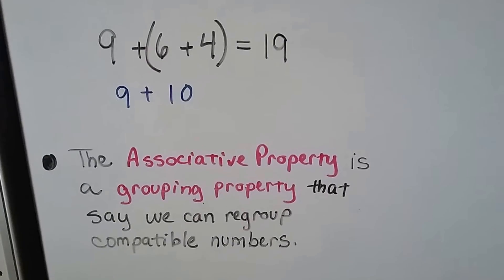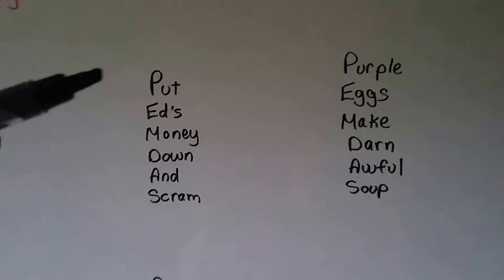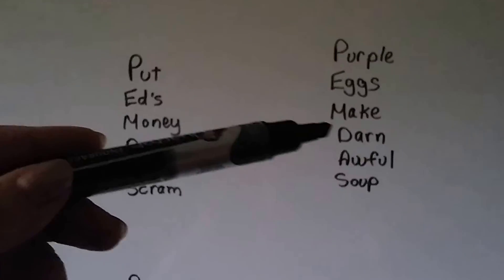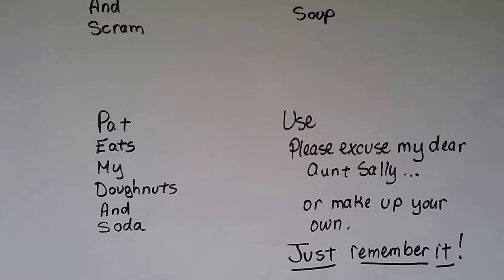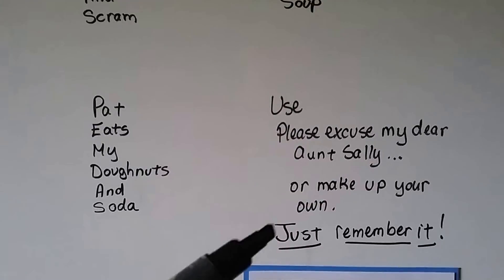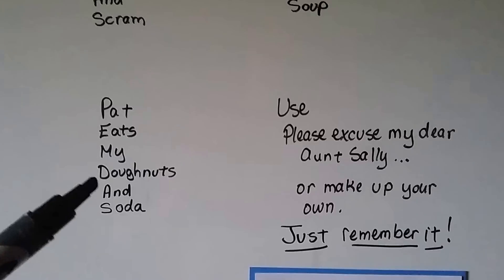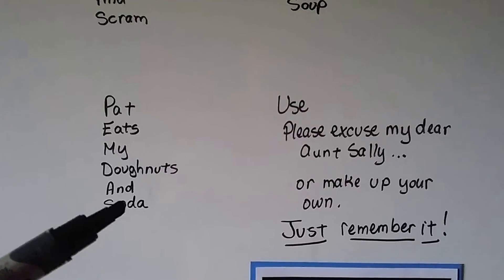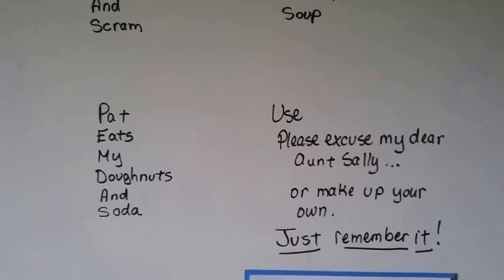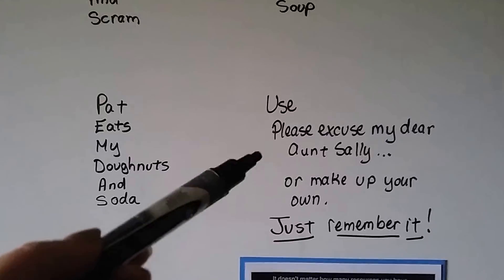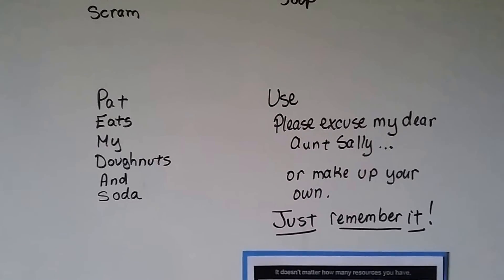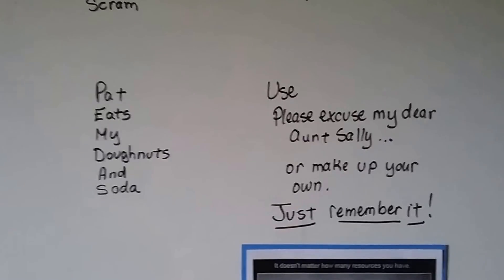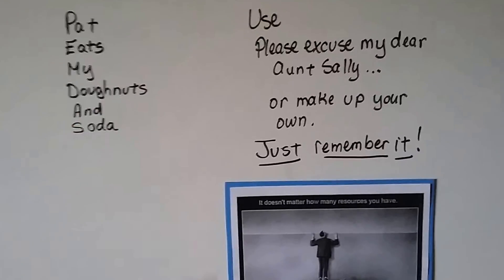The best way to remember PEMDAS is 'Please Excuse My Dear Aunt Sally' — or you could make up your own: 'Put Ed's Money Down And Scram,' 'Purple Eggs Make Darn Awful Soup,' 'Pat Eats My Donuts And Soda.' People have been using 'Please Excuse My Dear Aunt Sally' for over a hundred years for order of operations. Just remember it — you don't want to forget your saying in the middle of a test.